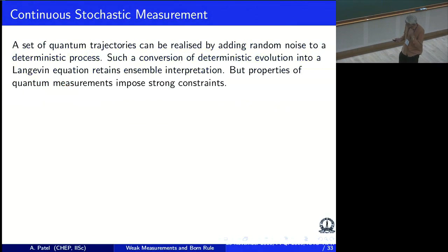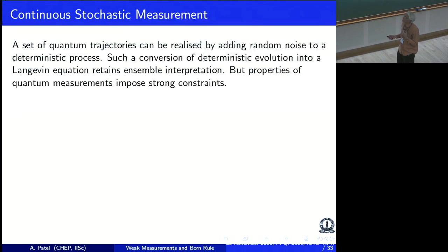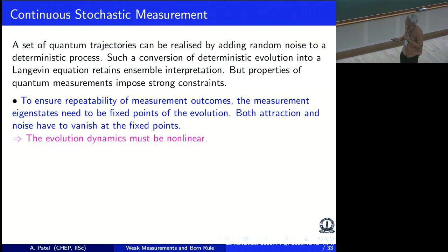There is a standard formalism for stochastic dynamics. It can be realized by adding a random noise to some deterministic process, and it has been heavily studied in the context of Brownian motion and the Langevin equation. But if I want to do that, I have to follow all the constraints of quantum mechanics which restrict what the stochastic process is. The measurement has to be repeatable: if I go to an eigenstate and keep measuring it, I should keep getting the same answer, which means that the measurement eigenstates are fixed points of the evolution.